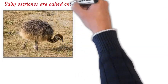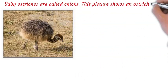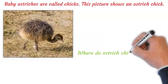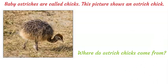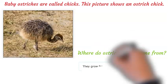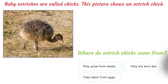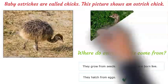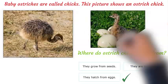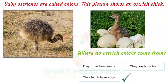Baby ostriches are called chicks. This picture shows an ostrich chick. Where do ostrich chicks come from? Like other birds, ostriches lay eggs, and later ostrich chicks hatch from the eggs.